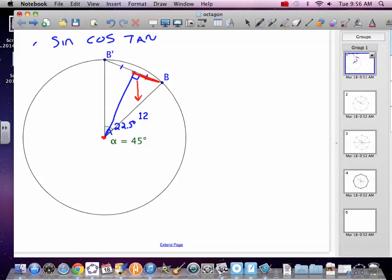So we have opposite and hypotenuse, which means sine. So sine of 22.5 equals opposite, that's that BB prime, over 12.